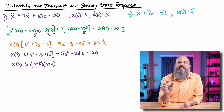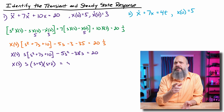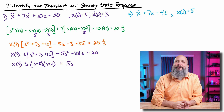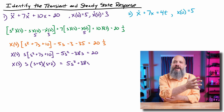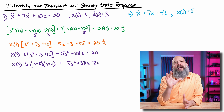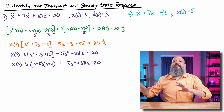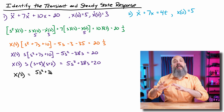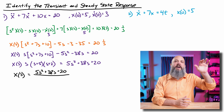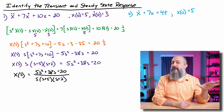Look at the middle term 7, and check numbers that add up to 7: 6 plus 1, 5 plus 2, 4 plus 3. We need them to multiply to 10 as well — 5 times 2 equals 10. So s plus 5 and s plus 2. Now the big division step: we take all of those s, s plus 5, s plus 2 terms and divide them over to the other side. We get x(s) equals 5s squared plus 38s plus 20 in the numerator, over s times (s plus 5) times (s plus 2) in the denominator.